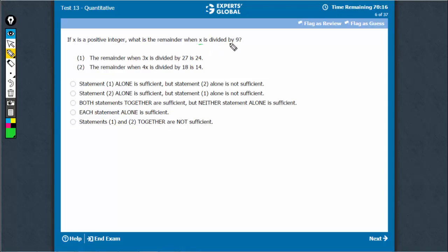We need to find the remainder of x with 9. This says 3x leaves remainder 24 by 27, that means 3x is equal to 27 into some integer, let's say k,